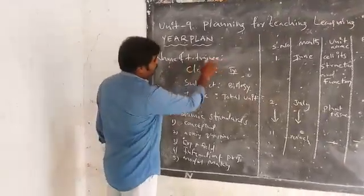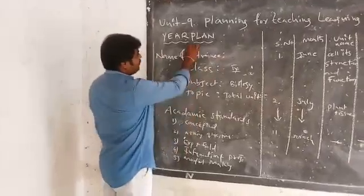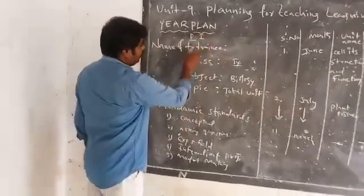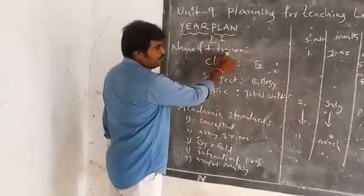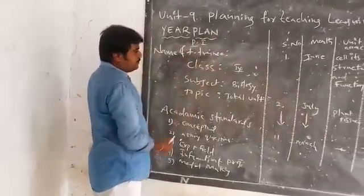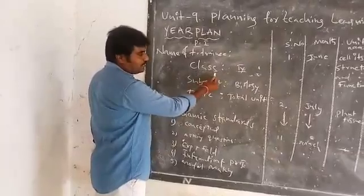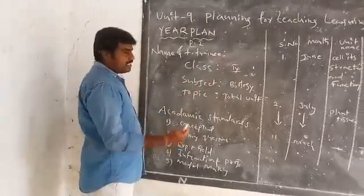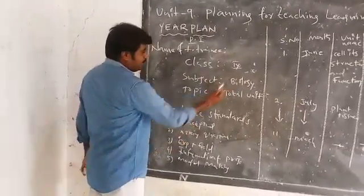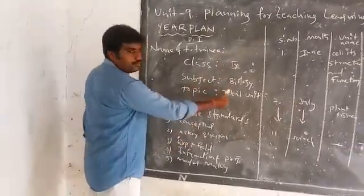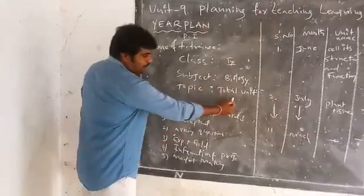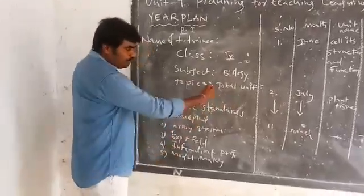The first component in the format is preliminary information. This includes: the class — for example, 9th class; the subject — Biology; the topic; and the total number of units.